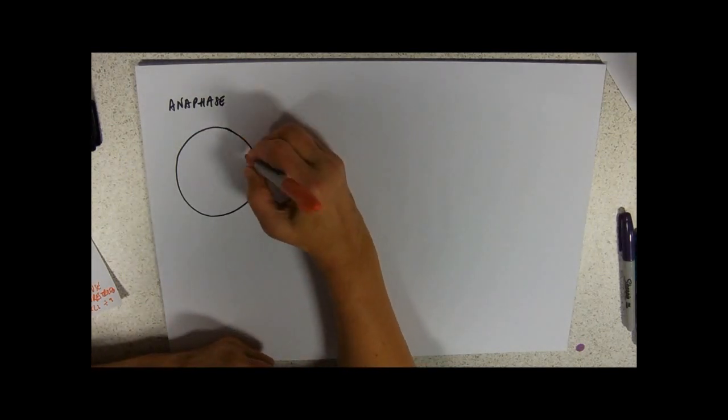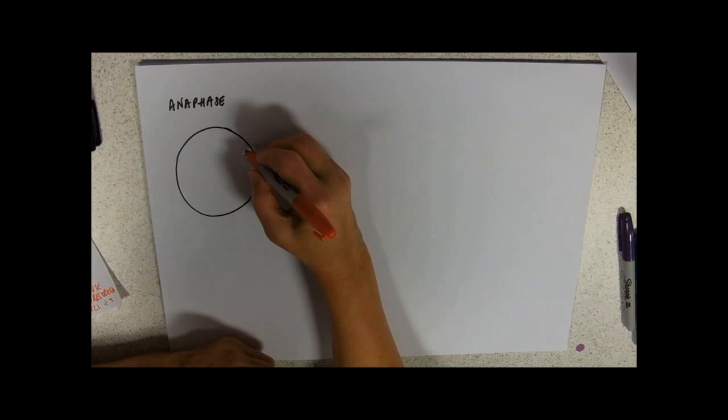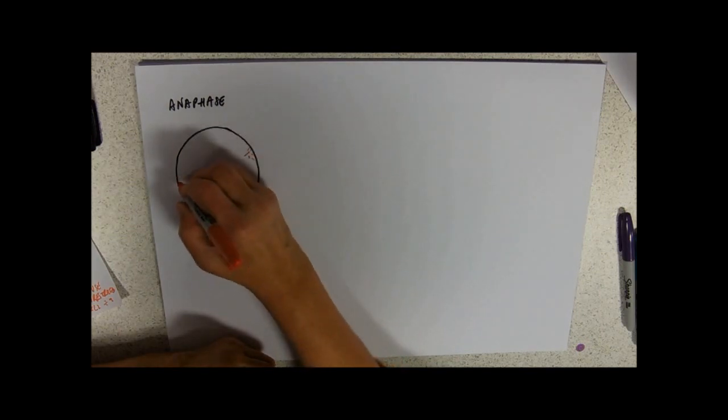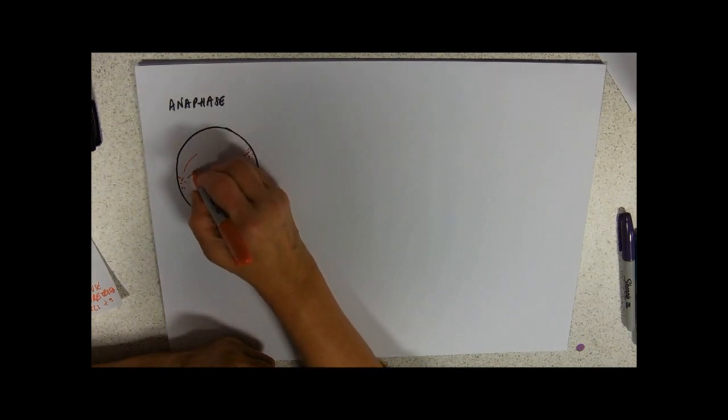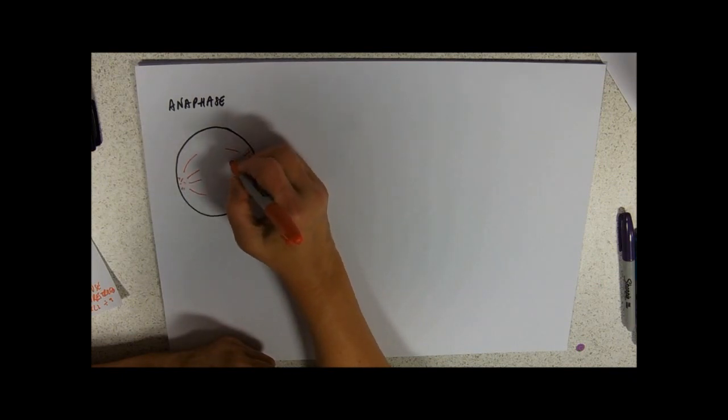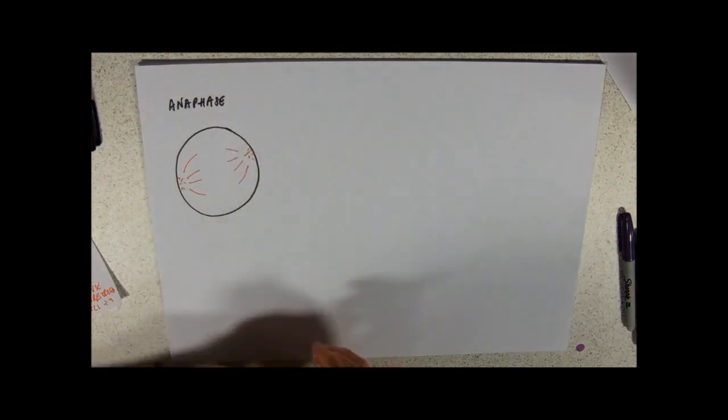So again we've got our poles, its asters, the centrioles and what causes this chromosome movement is actually the spindle fibres contract, they get shorter. So it's a pulling thing they pull these chromosomes through the cytoplasm.